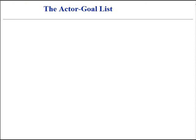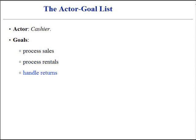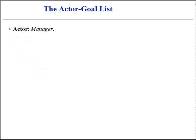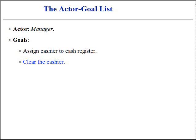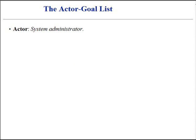Once the actors are identified, we can record their goals while being users of our system. Primary actors and their user goals are recorded in an actor-goal list. Actor: Cashier — Goals: process sales, process rentals, and handle returns. Actor: Manager — Goals: assign cashier to cash register, clear the cashier. Actor: System Administrator — Goals: add users, modify users, delete users.